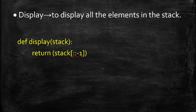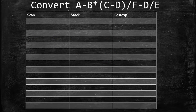For display — to show all elements from top to bottom — use the reverse slicing concept learned previously. Define: def display(stack): return stack[::-1]. This returns the list from last to first, meaning top to bottom. For example, list [5, 4, 3] with [::-1] gives [3, 4, 5].